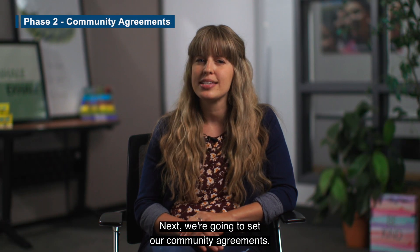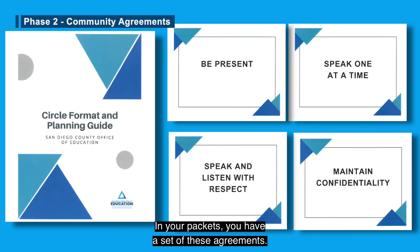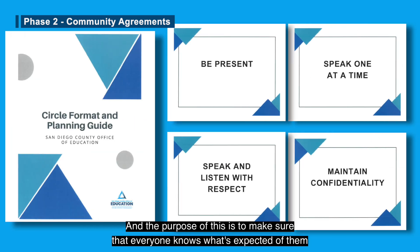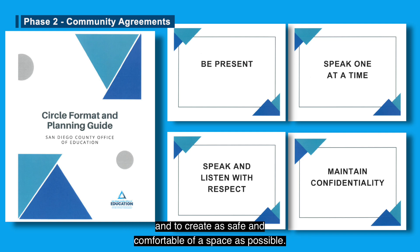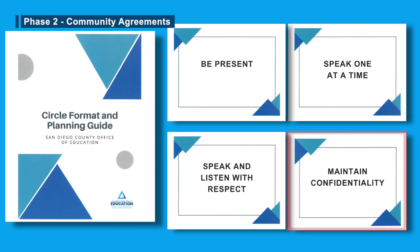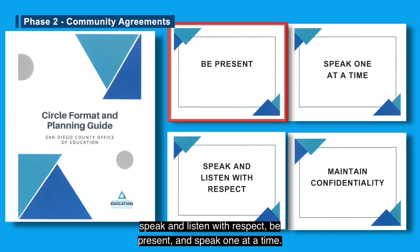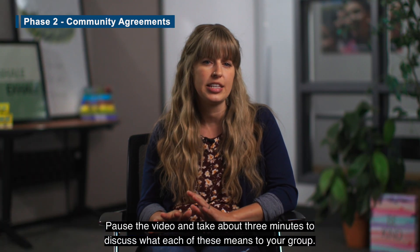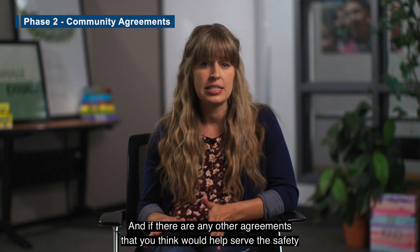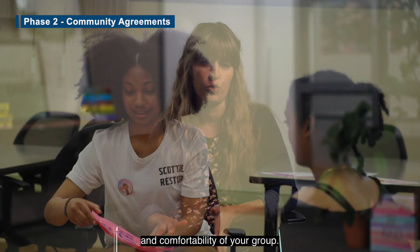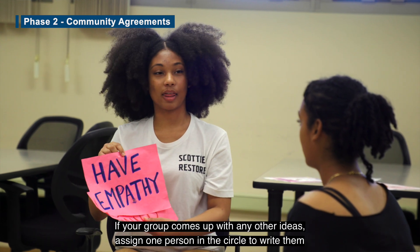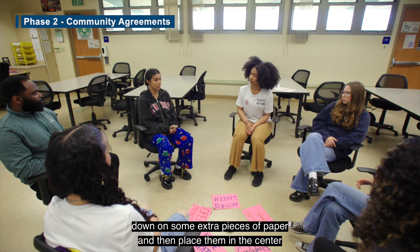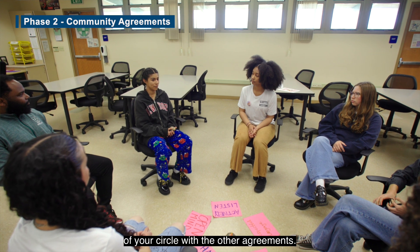Welcome back! Next we're going to set our community agreements. In your packets you have a set of these agreements, and the purpose is to make sure everyone knows what's expected and to create as safe and comfortable a space as possible. The agreements for our circle today are: maintain confidentiality, speak and listen with respect, be present, and speak one at a time. Pause the video and take about three minutes to discuss what each of these means to your group, and whether there are any other agreements that would help serve the safety and comfort of your group.